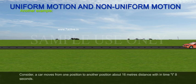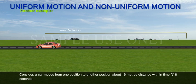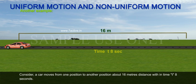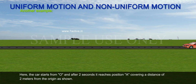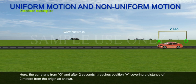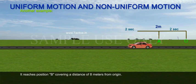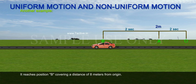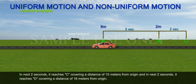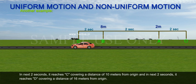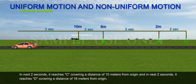Another example: consider a car moves from one position to another position about 16 meters distance within time t = 8 seconds. The car starts from O and after 2 seconds it reaches position A covering a distance of 2 meters from the origin as shown. It reaches position B covering a distance of 8 meters from origin, and in the next 2 seconds it reaches D covering a distance of 16 meters from origin.